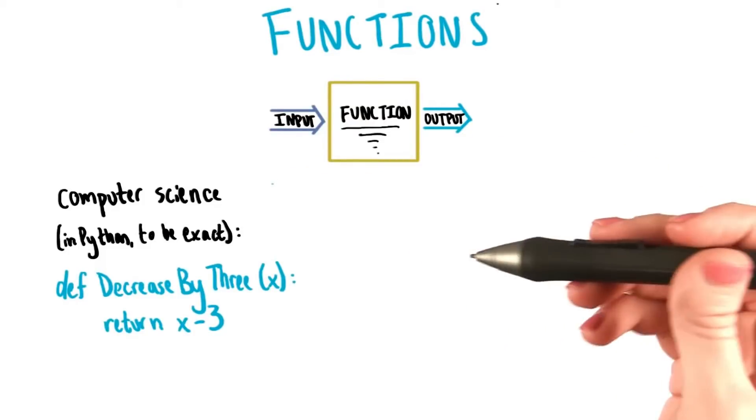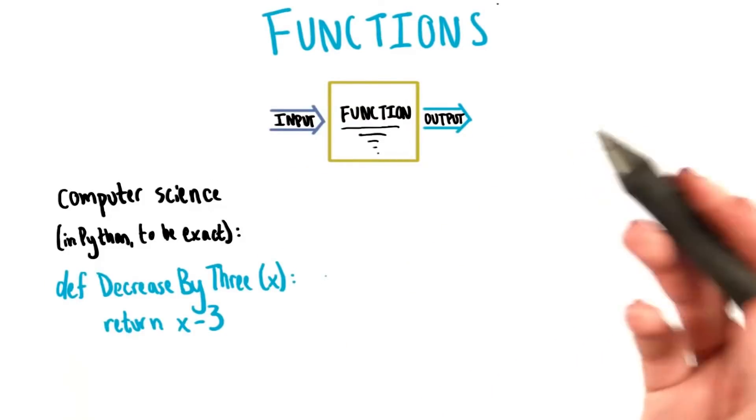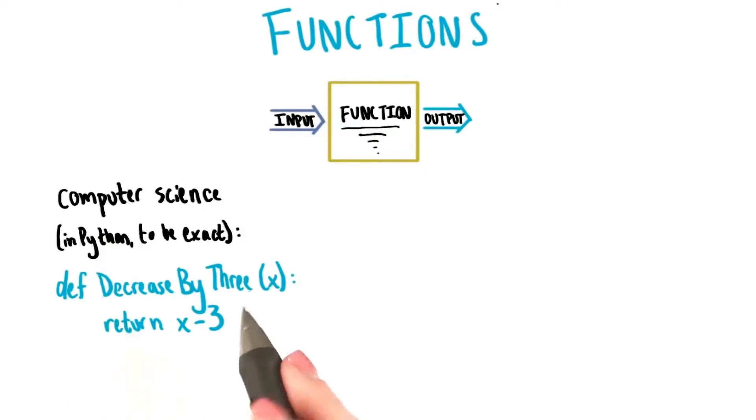We just saw that in computer science, you might write a function like this. First, we name the function. In this case, we named our function decrease by 3.